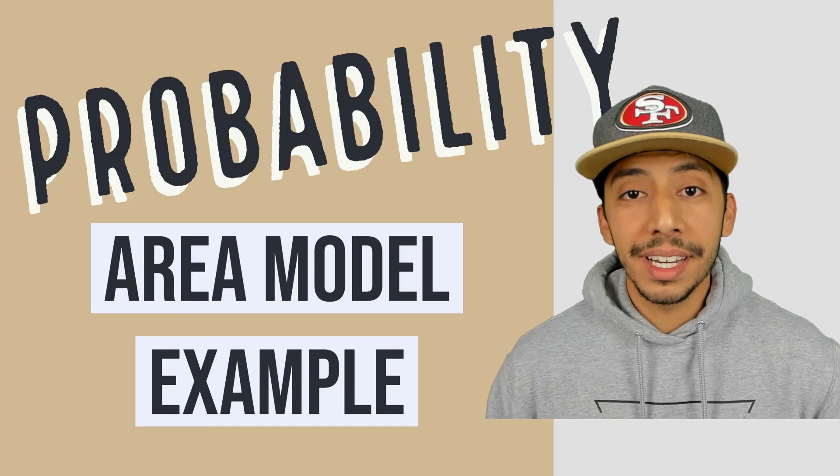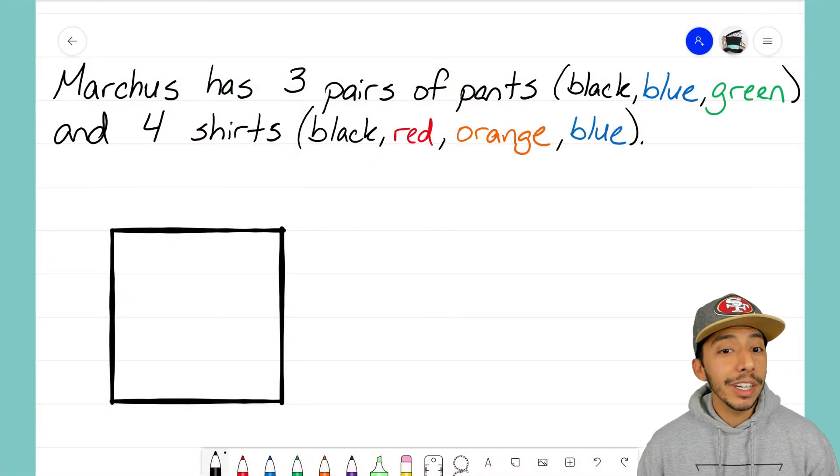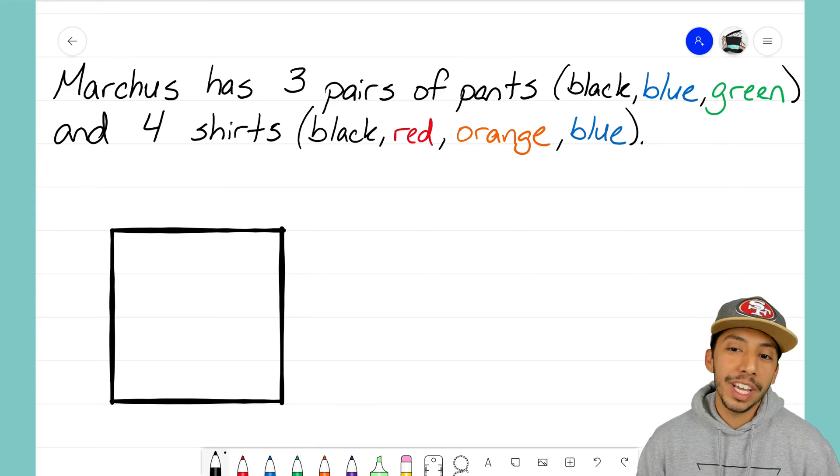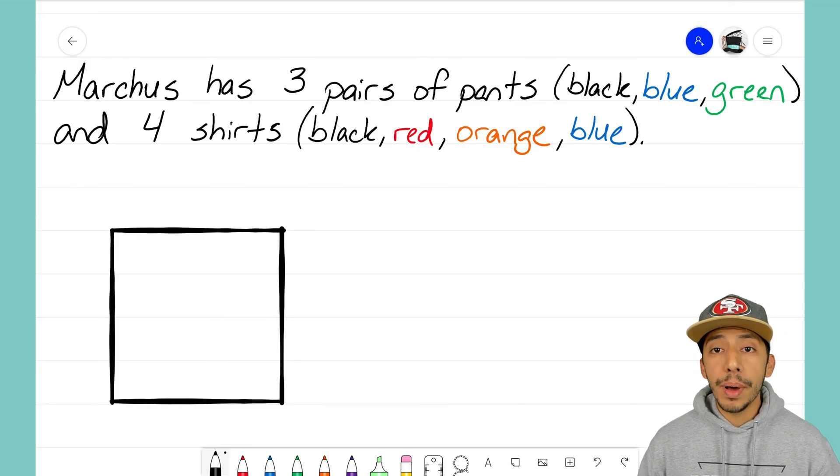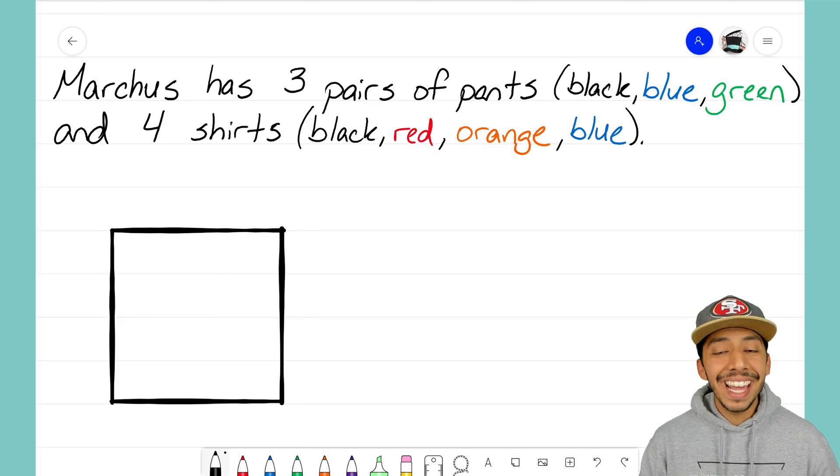Let's look at our situation. We have Marcus who has three pairs of pants: black, blue, and green, and four shirts: black, red, orange, and blue. First, before we even attack any problem here, we want to map out the sample space. Remember, the sample space is just listing out all the possible combinations we have from these two different options. He has his pairs of pants and he has his shirts. We want to see what are the possible combinations he can make.